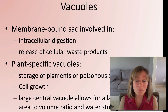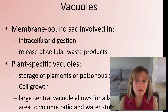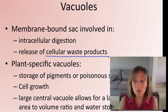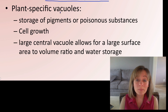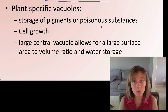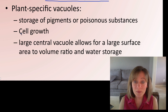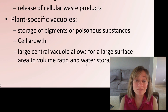Vacuoles are another organelle with many different types in eukaryotic cells. In general they're membrane-bound, help in intracellular digestion, and are important in releasing cellular waste — taking bulky waste to the cell membrane through exocytosis. Plant-specific vacuoles store pigments or poisonous substances, help in cell growth, and the large central vacuole is important for holding water, providing a large surface area to volume ratio for water storage.